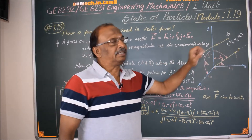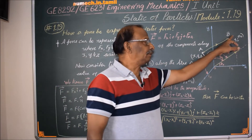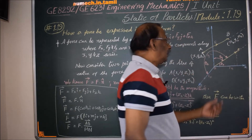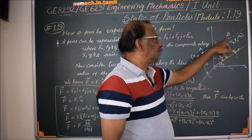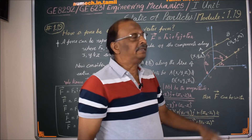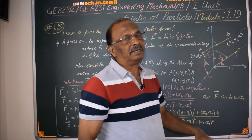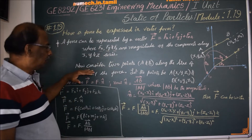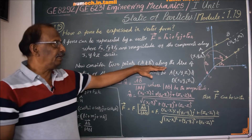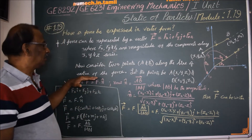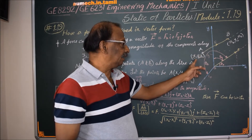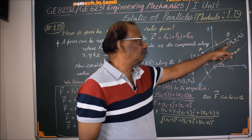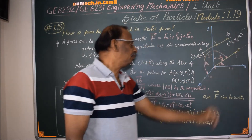Now consider that we have two points and one force is acting along a line of action. Consider two points A and B along the line of action of the force. A has coordinates (x1, y1, z1) and B has coordinates (x2, y2, z2).